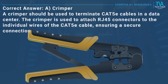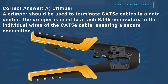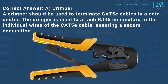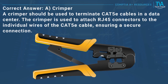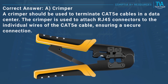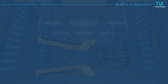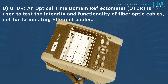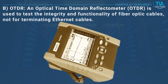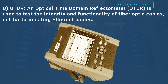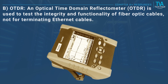Correct answer: A, crimper. A crimper should be used to terminate CAT5E cables in a data center. The crimper is used to attach RJ45 connectors to the individual wires of the CAT5E cable, ensuring a secure connection. B, OTDR: an optical time domain reflectometer (OTDR) is used to test the integrity and functionality of fiber optic cables, not for terminating Ethernet cables.